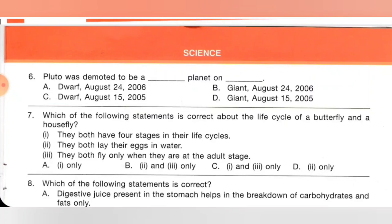Seventh one: which of the following statements is correct about the life cycle of a butterfly and a housefly? 1. They both have four stages in their life cycle. 2. They both lay their eggs in water. 3. They both fly only when they are at an adult stage. Options: A: one only, B: two and three only, C: one and three only, D: two only. We know butterfly and housefly have four stages in their life cycle and they can fly only when at adult stage. So one and three are correct — option C.